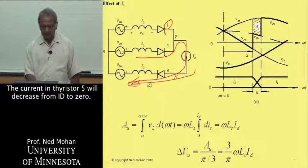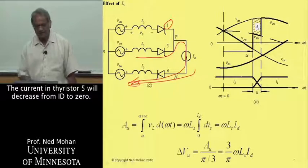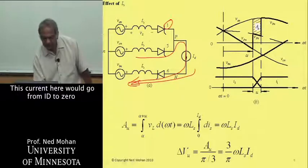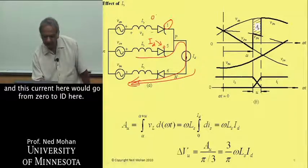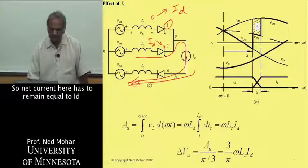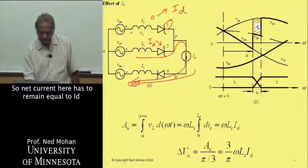What's going to happen when we gate this thyristor 1, the current in thyristor 5 would decrease from ID to 0. This current here would go from ID to 0. And this current here would go from 0 to ID.